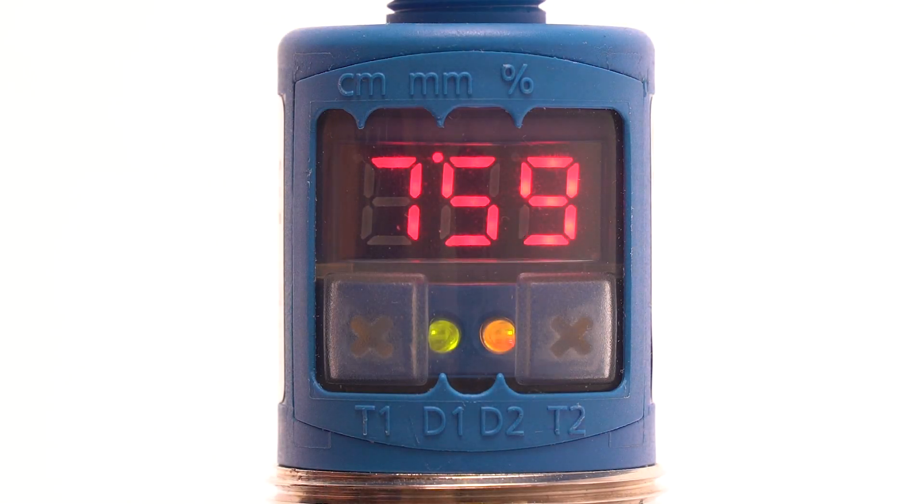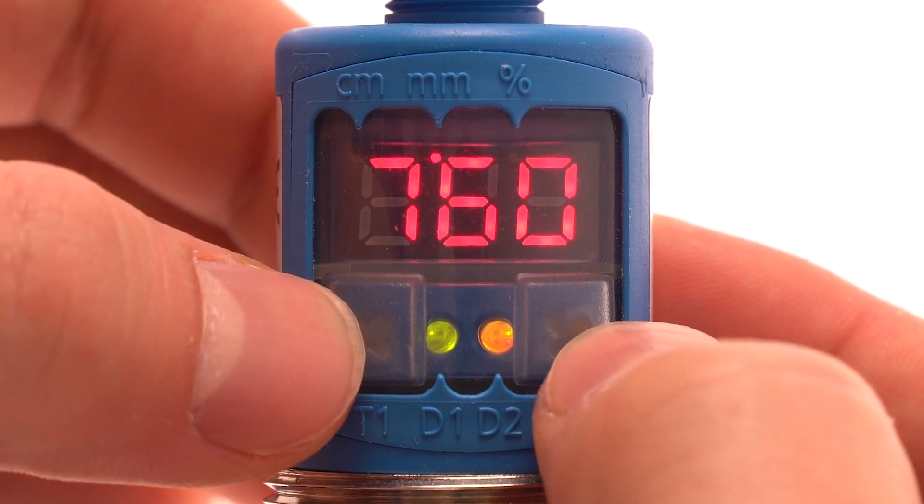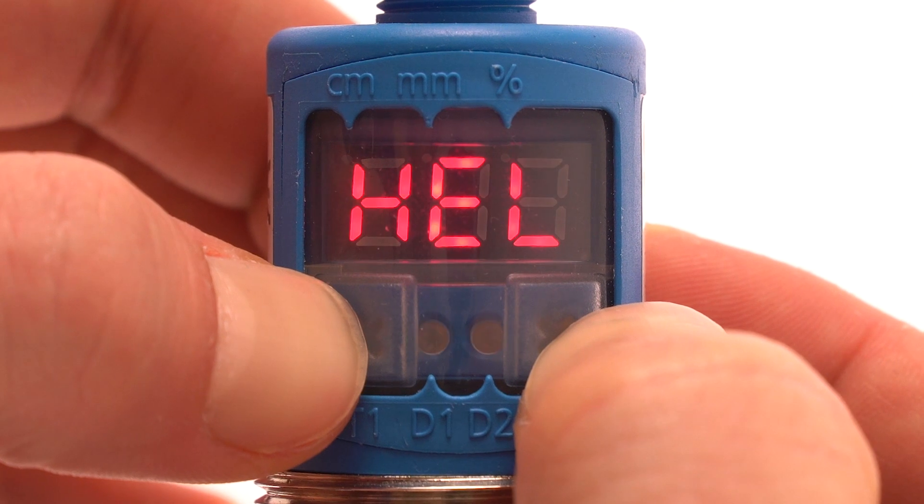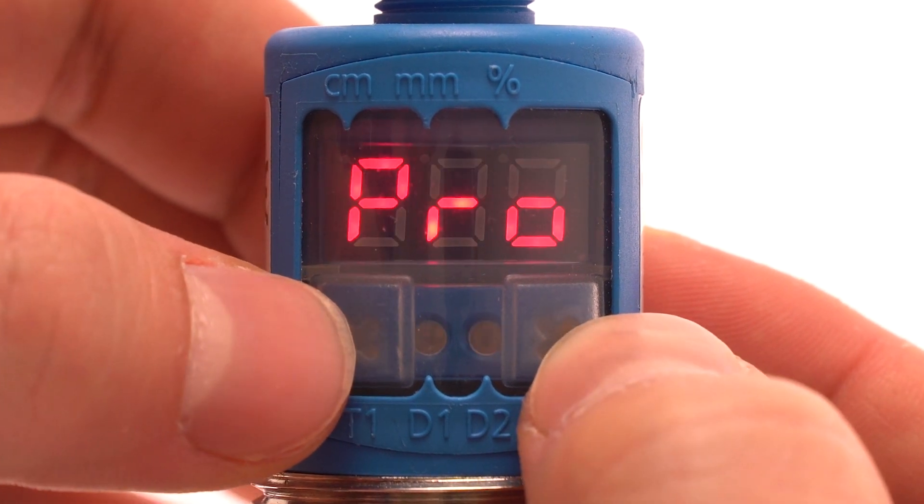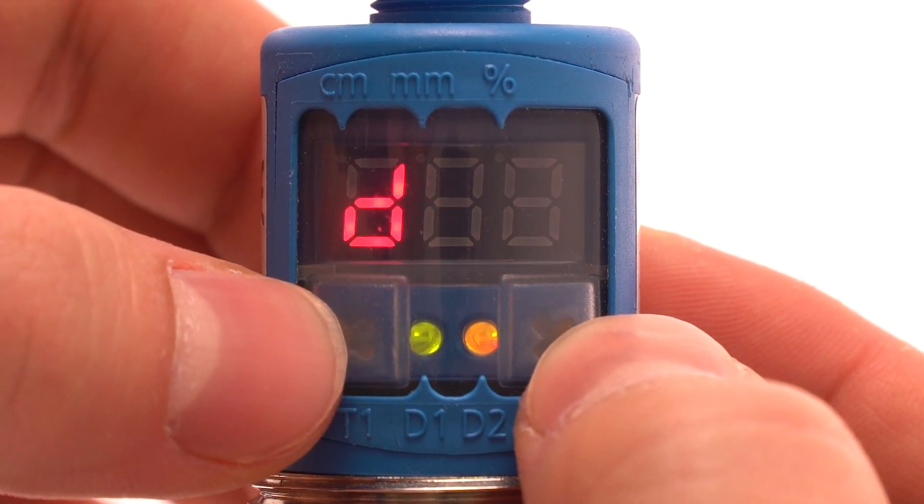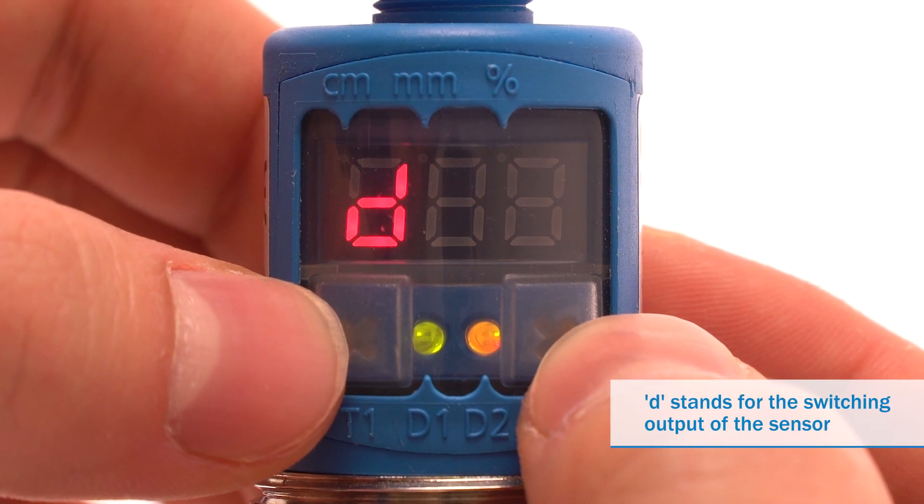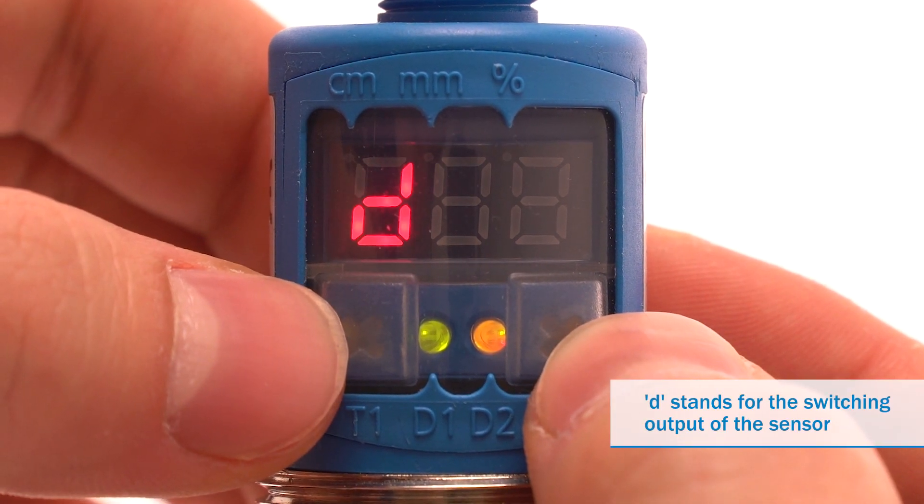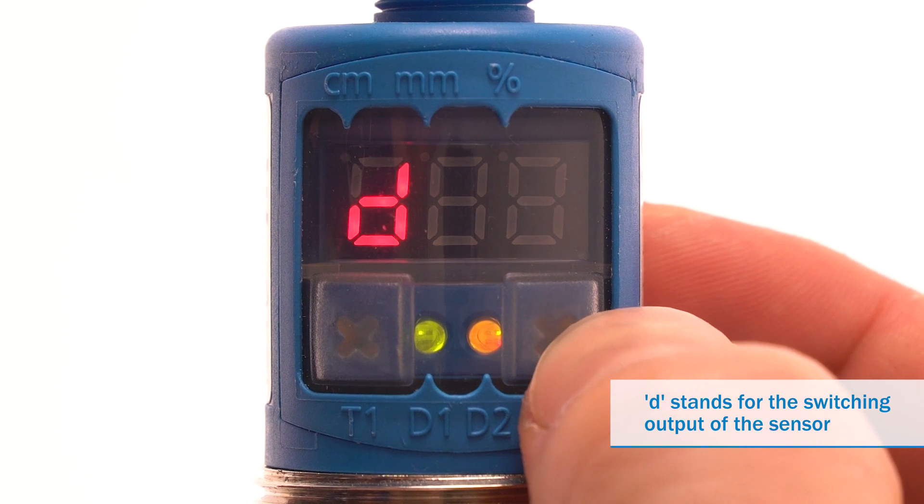Now keep T1 and T2 pressed down approximately three seconds until hello has been displayed. When D appears, press T2. Now IU is being displayed.